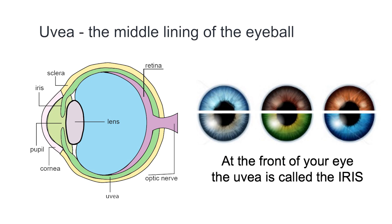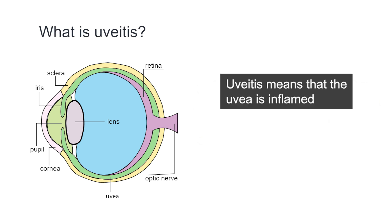The uvea is the middle lining of the eyeball. At the front of the eye it's called the iris. Uveitis means the uvea is inflamed.